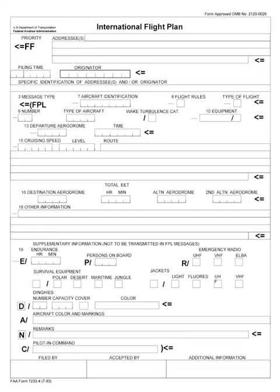J and Q routes run from 18,000 feet to 45,000 feet. The altitude separating the low and high airway structures varies from country to country. For example, it is 19,500 feet in Switzerland and 25,500 feet in Egypt.